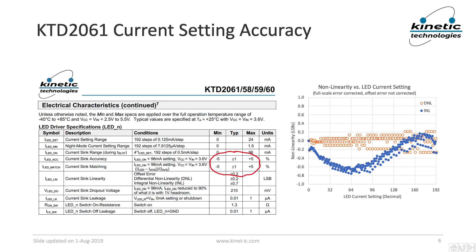On the right is a measured linearity graph of a typical current sink. It shows the integral nonlinearity, or INL, in blue dots for all 192 setting steps. INL is a measure of the absolute accuracy — how far off is the actual measured current from the theoretically perfect current. Also shown in orange circles is the differential nonlinearity, or DNL, which is a measure of the step size variation from the theoretically perfect step size.